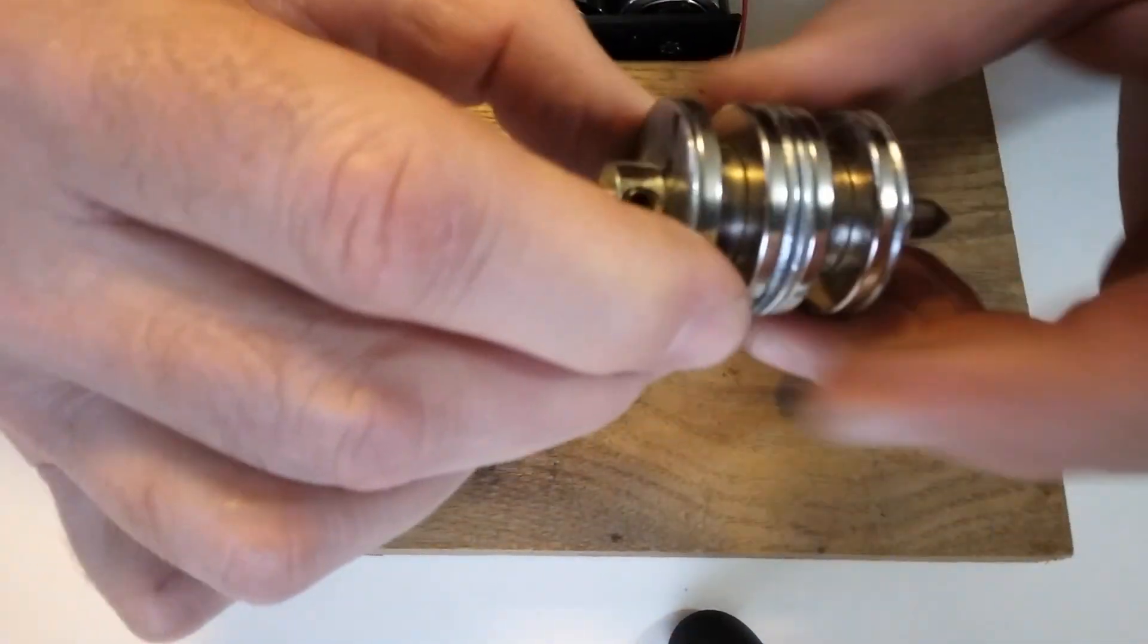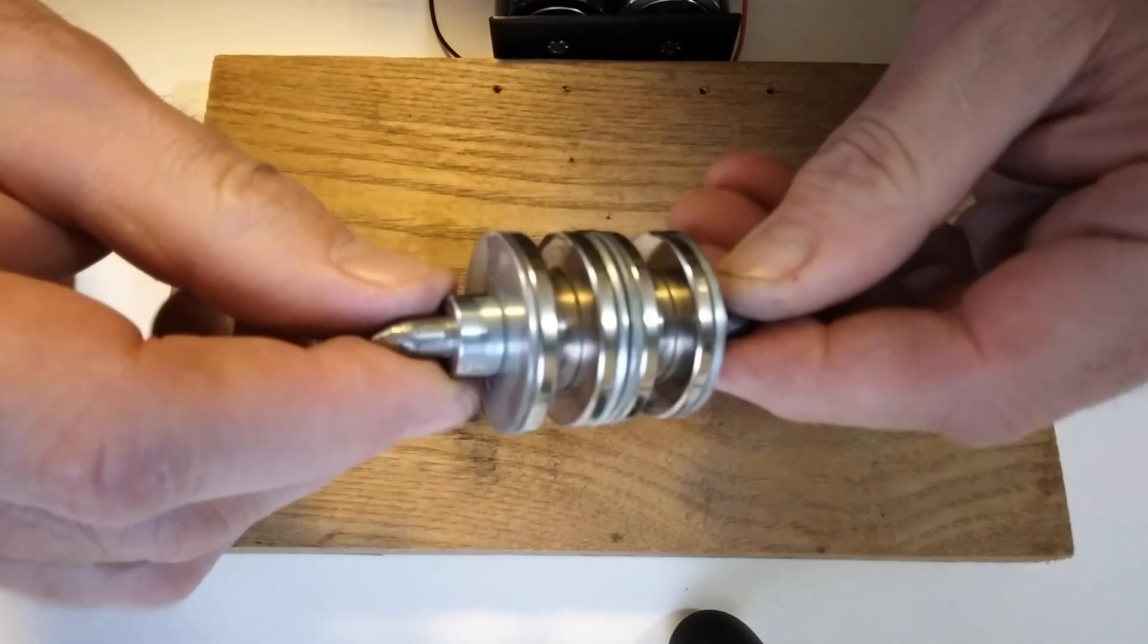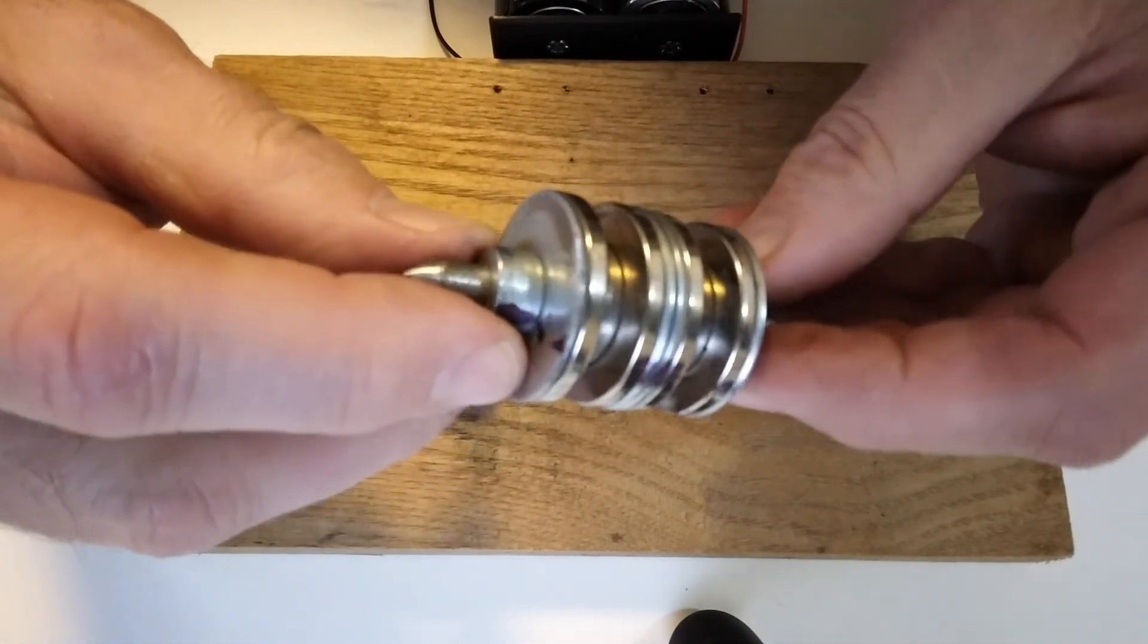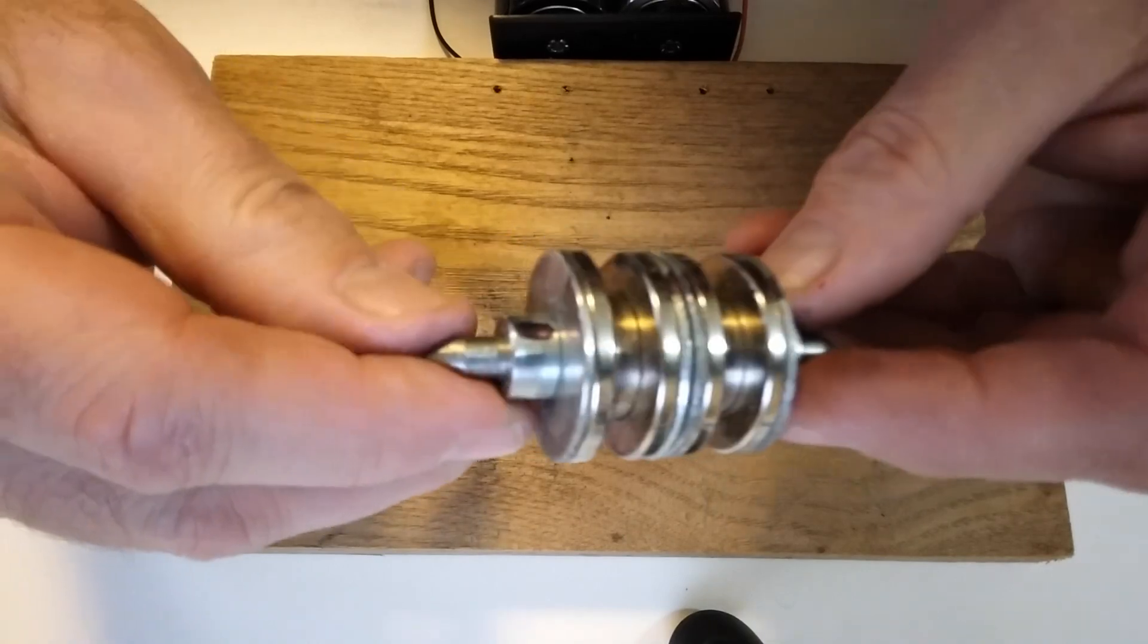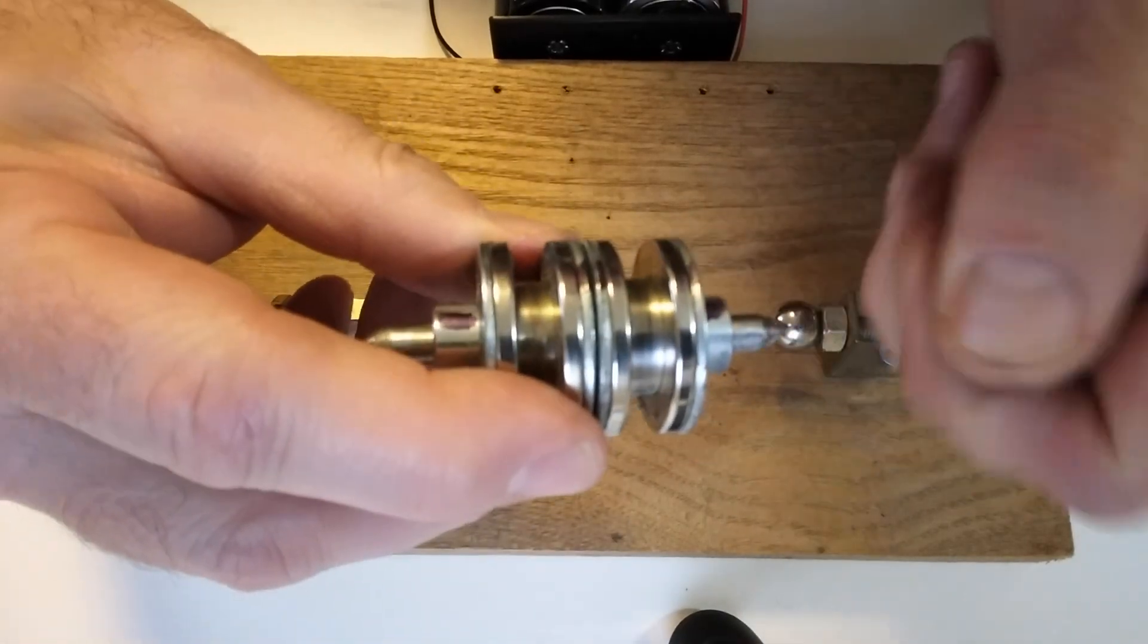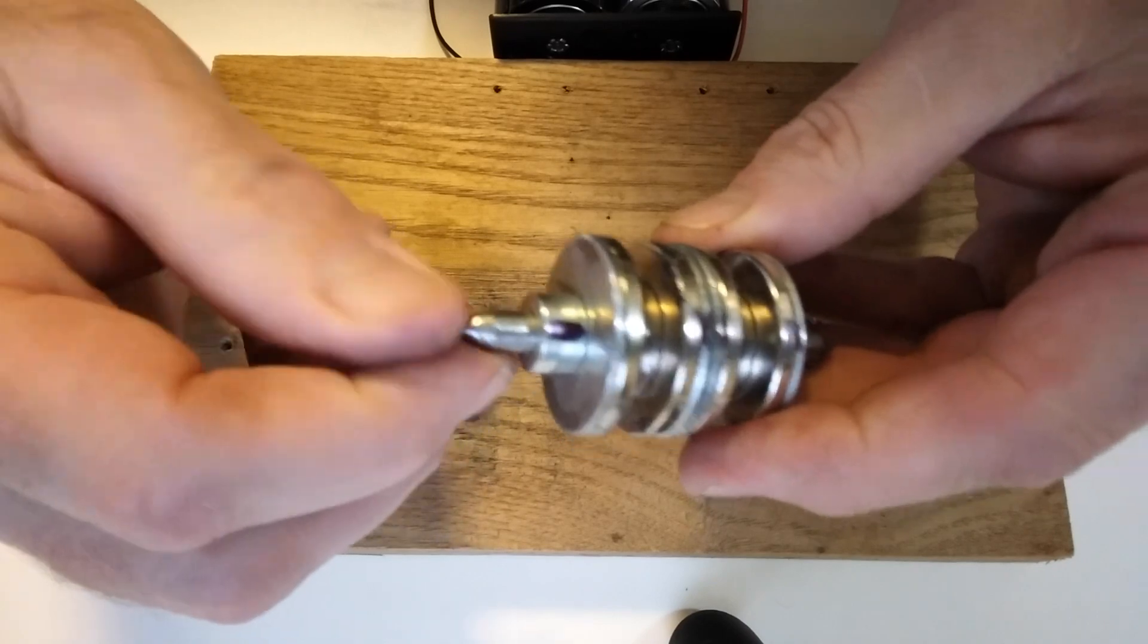This is the rotor of the motor. This is a very simple one winding DC electric motor or generator. If you turn it, it'll generate current too.